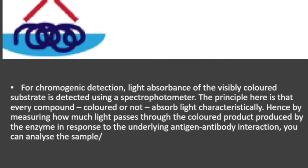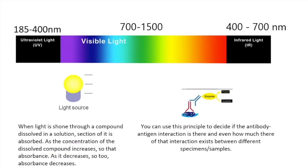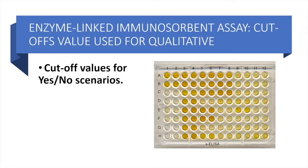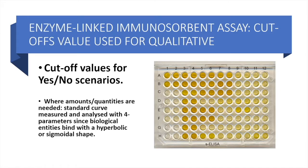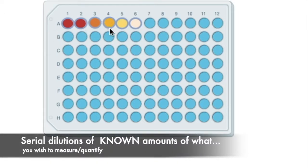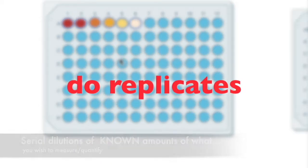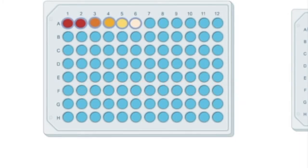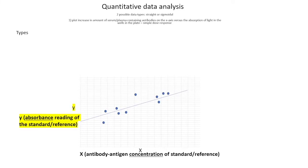You can use this principle to decide if an antibody has been produced against an antigen — just as a yes or no — or, if you fine-tune it and include a known amount of the antigen as a standard, you can even determine how much of the antibody-antigen interaction is present in a sample across individuals.